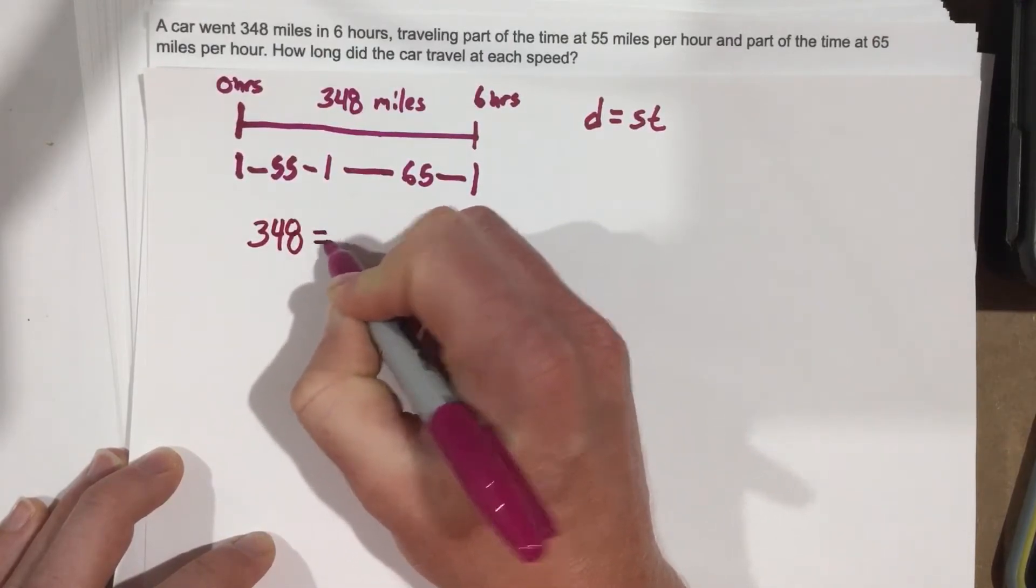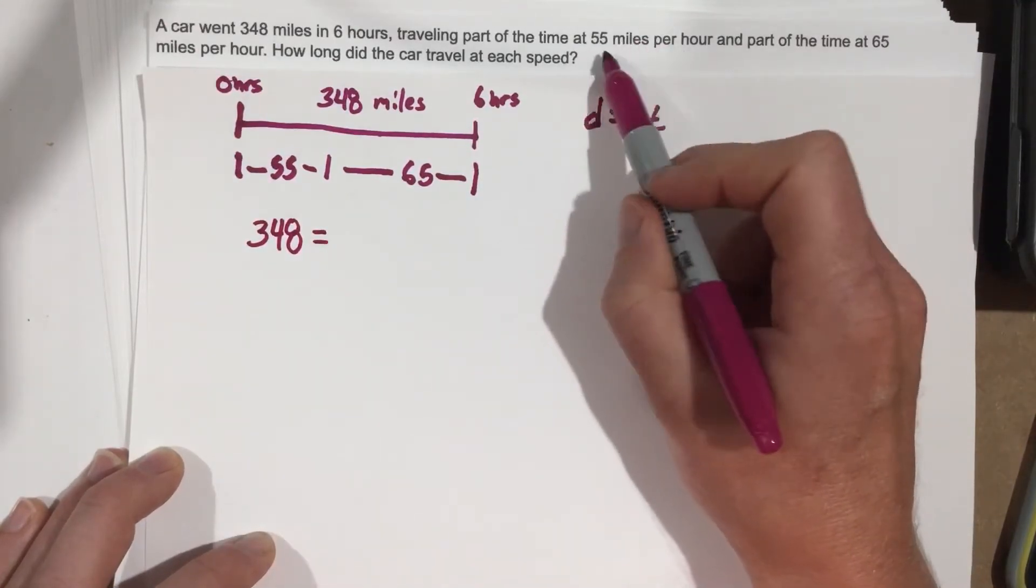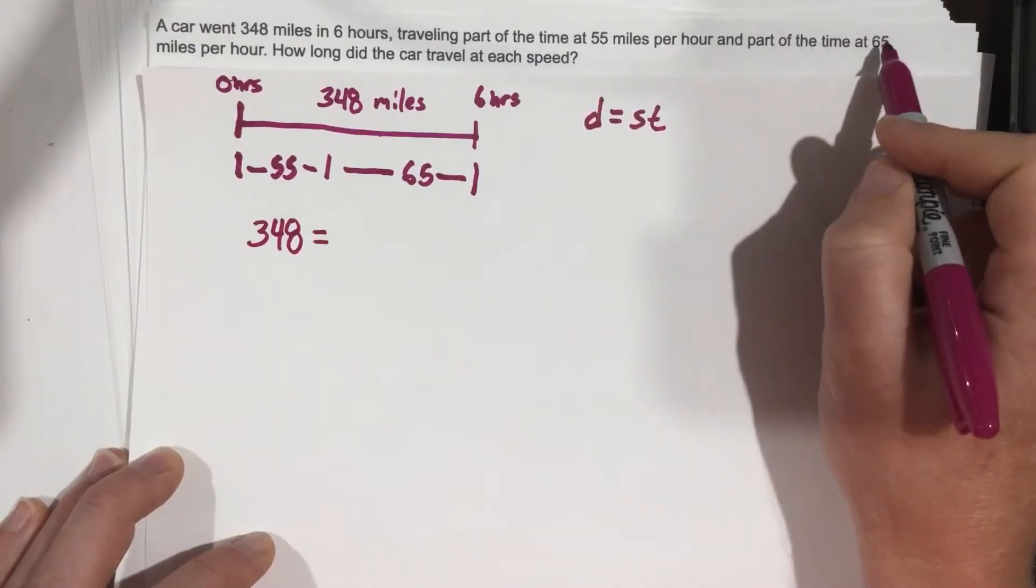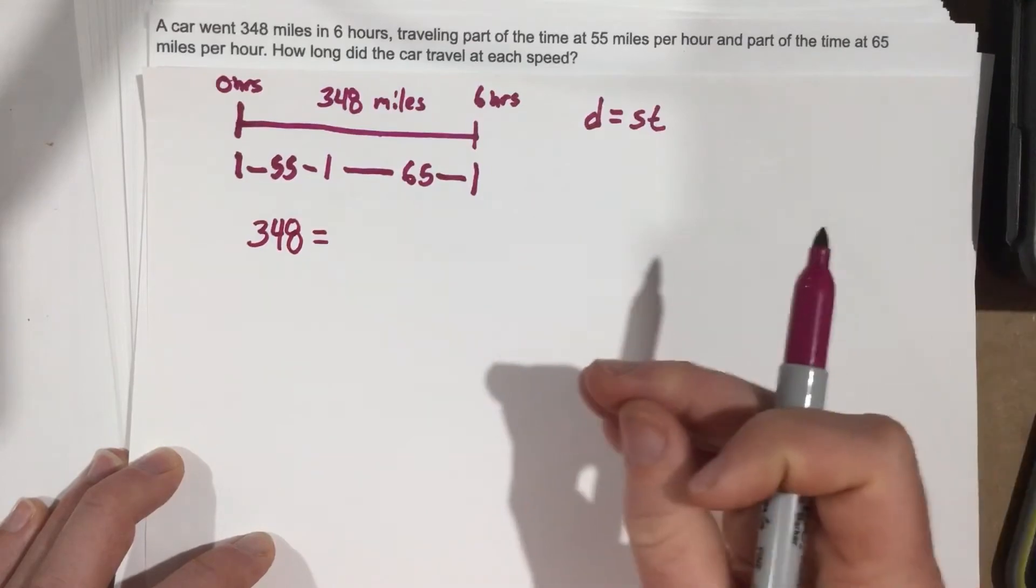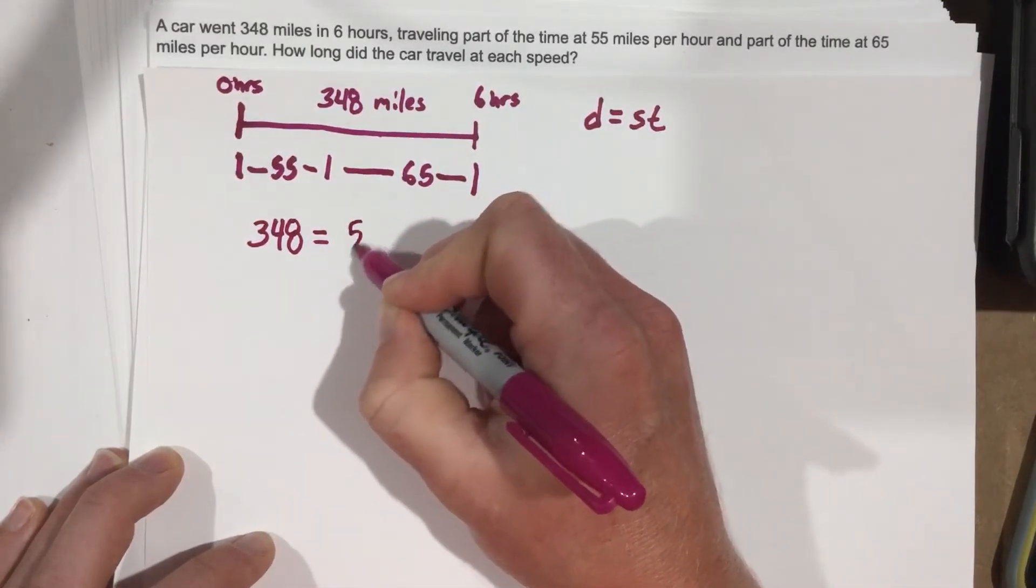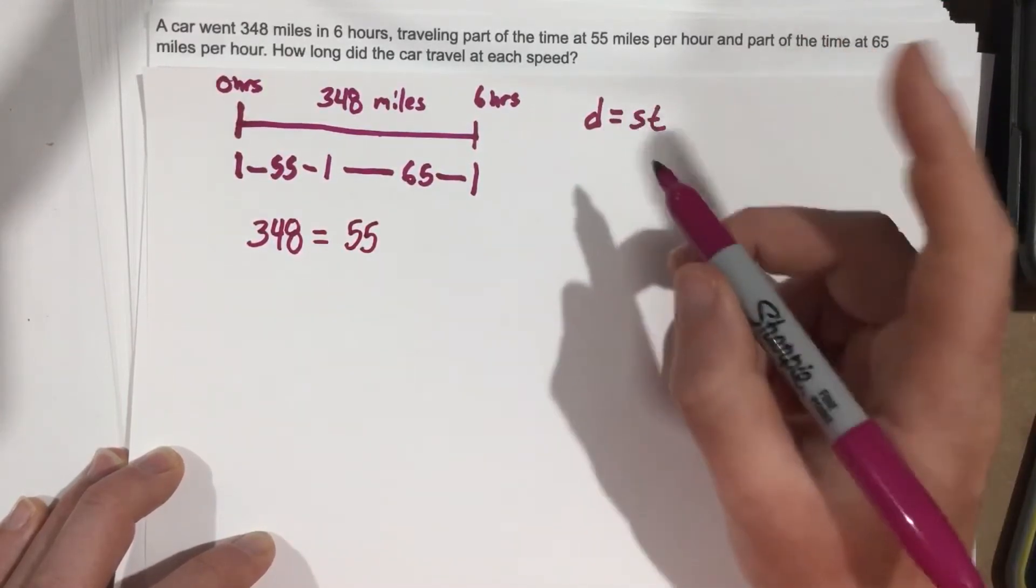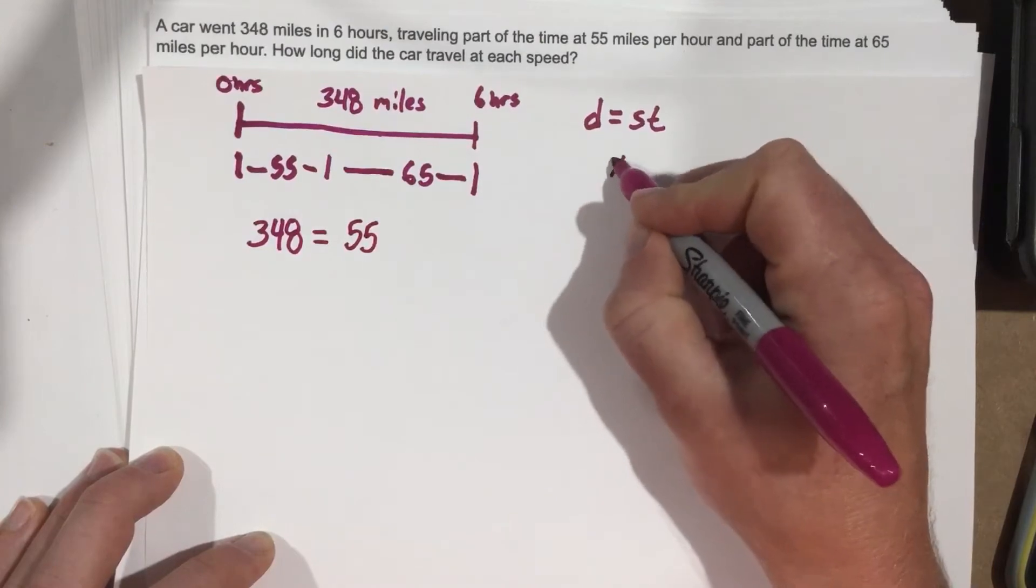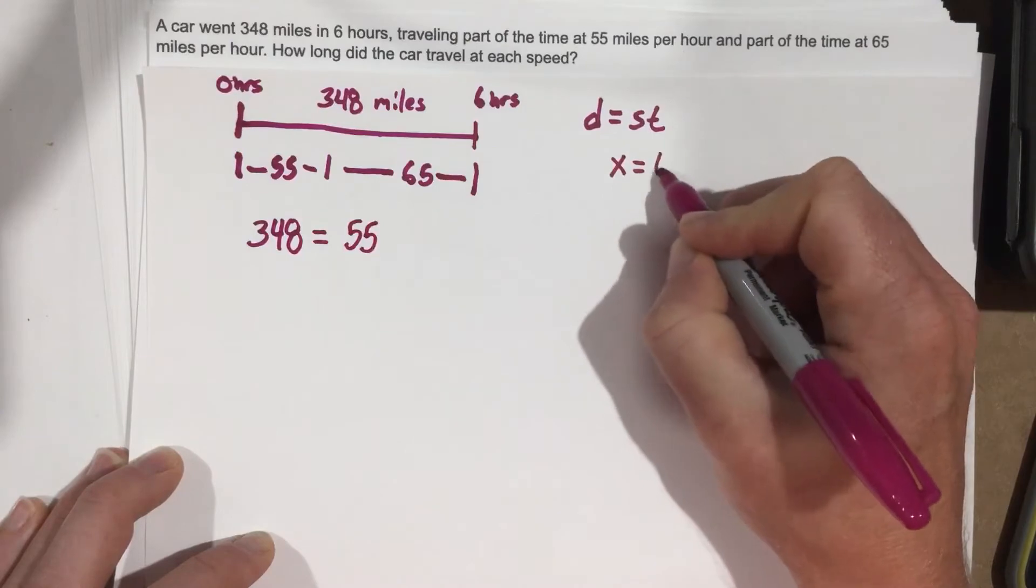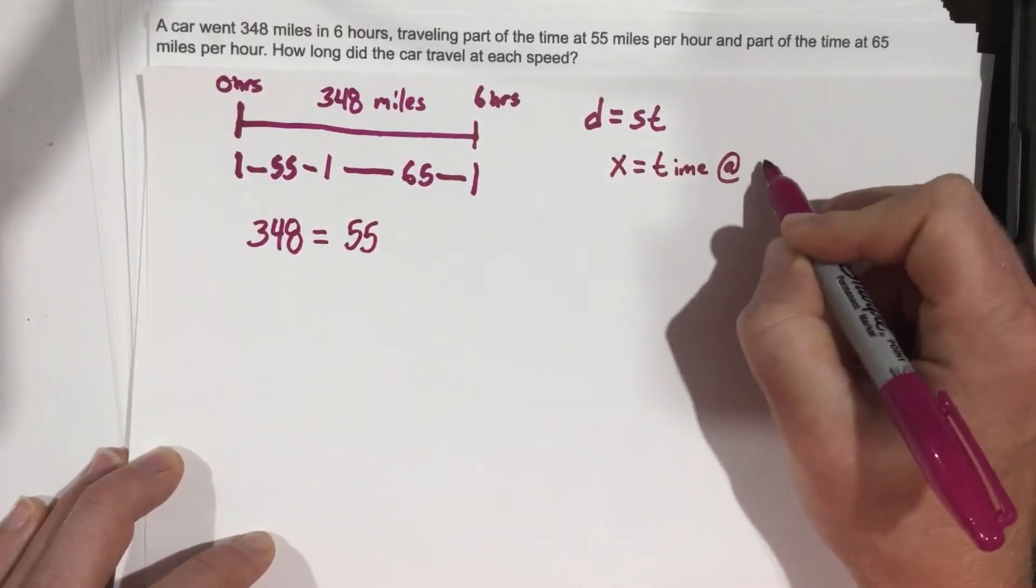So let's go ahead and write 348. And we know 348 miles is going to equal 55 miles per hour times some time and 65 miles per hour times some time added together. So let's go ahead and write this out. We're going to say 55 and then we need to take it times some time. I'm going to say X is going to equal the time at 55.